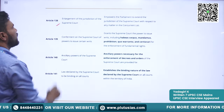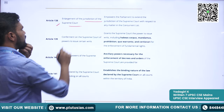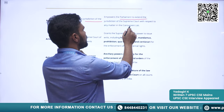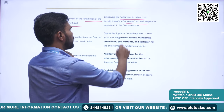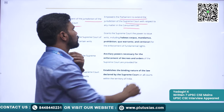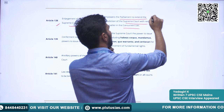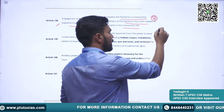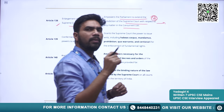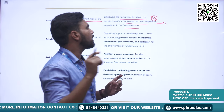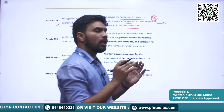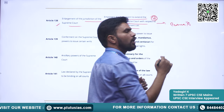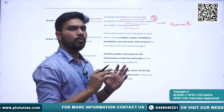Article 138 covers the enlargement of jurisdiction of the Supreme Court. The Parliament has the power to extend the jurisdiction of the Supreme Court with respect to any matter in the Concurrent List. Importantly, Parliament can enhance the jurisdiction but does not have the power to reduce the jurisdiction of the Supreme Court.